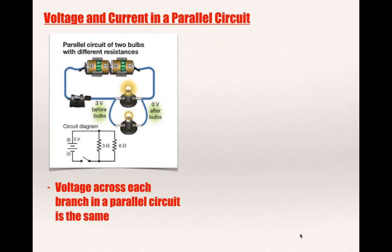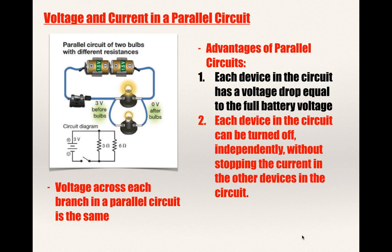Voltage across each branch in a parallel circuit is the same. You're not going to alter the voltage just because you're giving the electric current more choices to flow. There are two key advantages of parallel over series circuits: first, each device has a voltage drop equal to the full battery voltage; second, each device can be turned off independently without stopping current to the other devices.